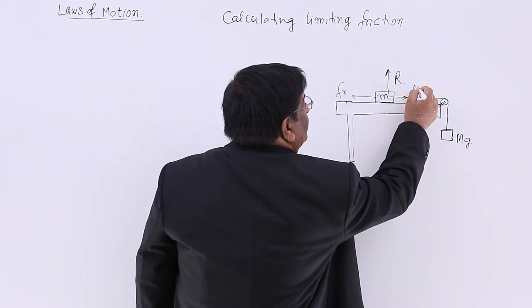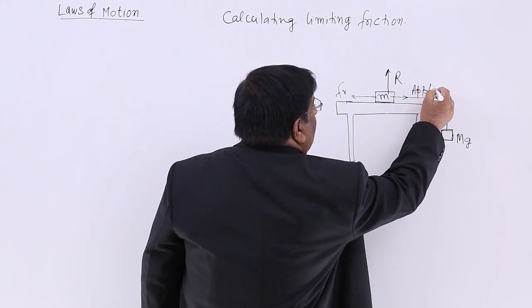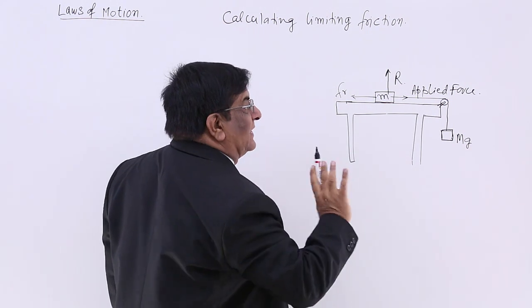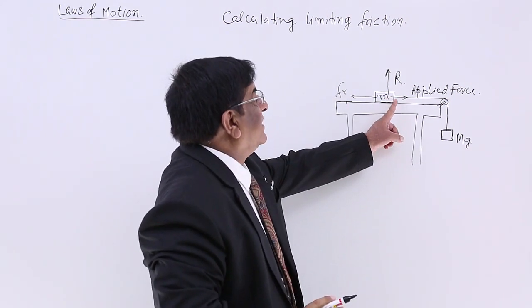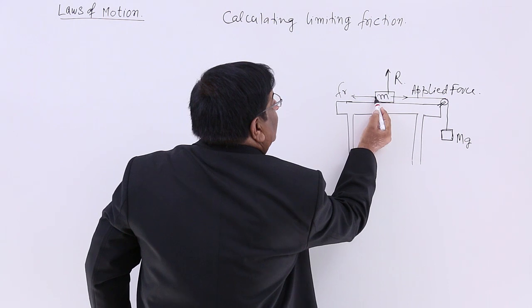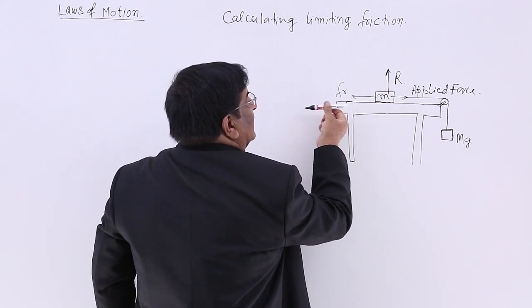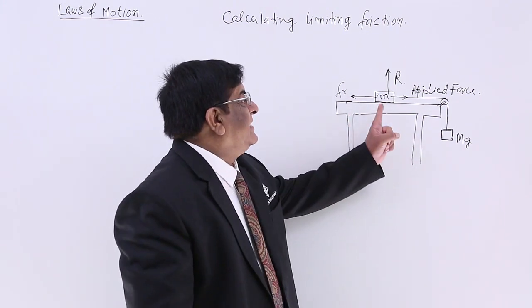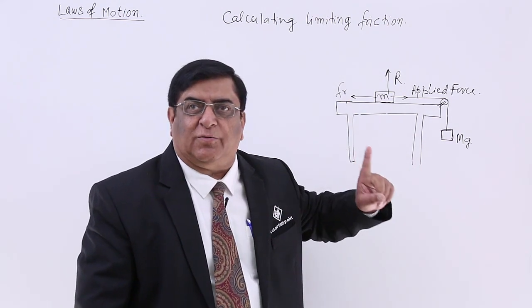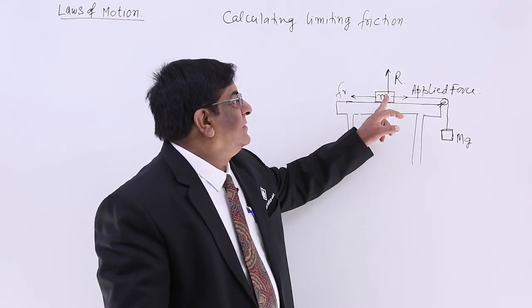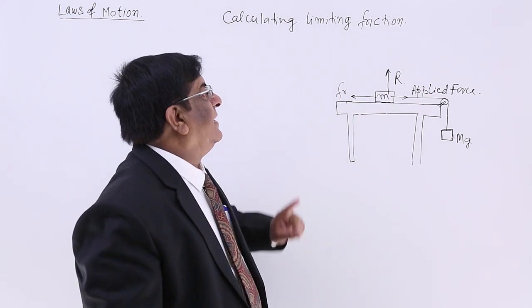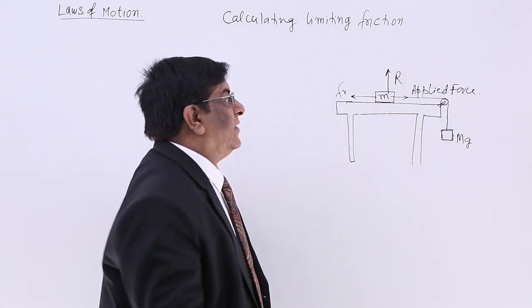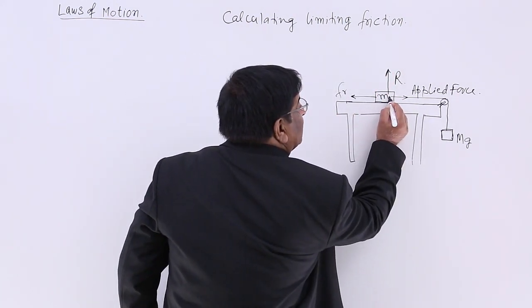This is the applied force. When there is an intention of motion — the body has not moved so far — when there is an intention of motion, then a force of friction is generated here, reacting in this direction. At present the body is not moving. Why is it not moving? Because this applied force is balanced by the force of friction. And why is this body not moving up? Because it is also experiencing a force downward.